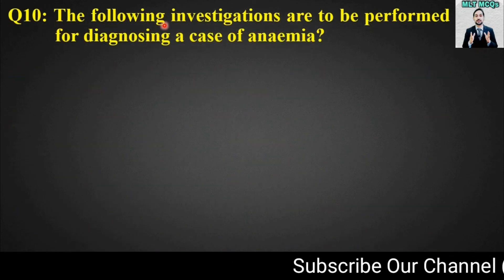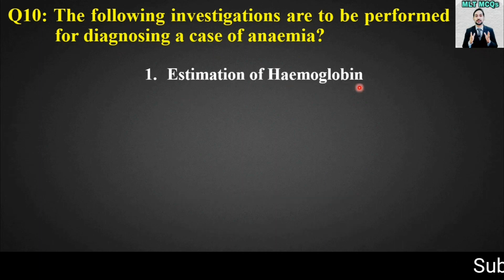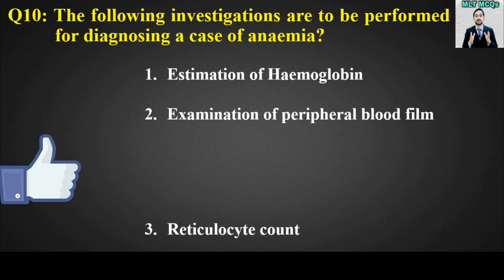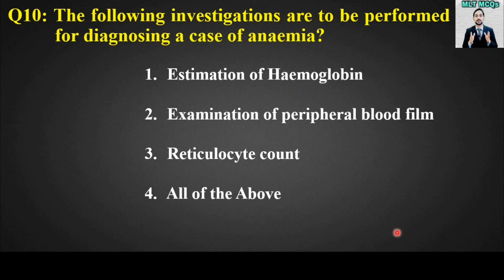The last MCQ: The following investigations are to be performed for diagnosing a case of anemia. Options include: estimation of hemoglobin, examination of peripheral blood film, and reticulocyte counts — all of which are very important for diagnosing a case of anemia.